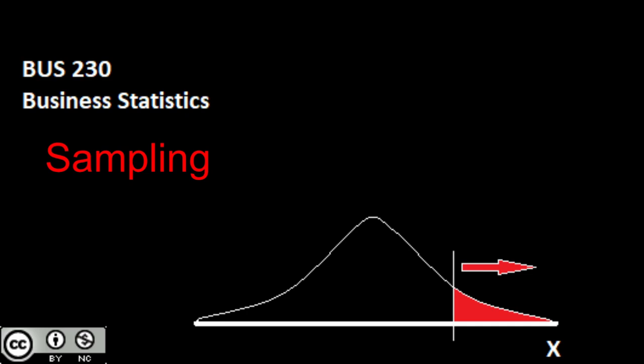Let's start off by taking a look at why we engage in sampling — why don't we just use the full population each time? The first reason is that it's too time consuming. Quite often it's going to take way too long to collect, contact, or even to locate the entire population.